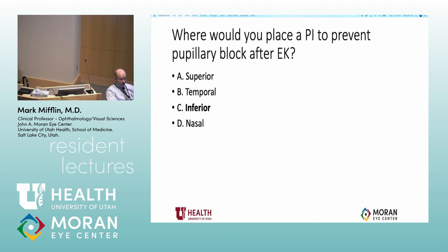Inferior peripheral iridotomy, so that fluid can circulate — the air will be on top, and fluid can circulate through the iris to help prevent pupillary block. If you don't understand that at a more junior level, don't worry about it — it will be something you'll understand later.